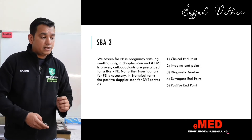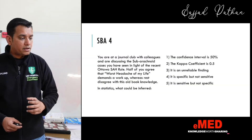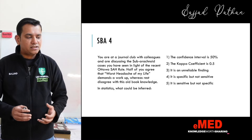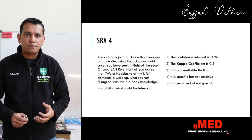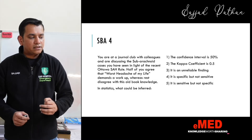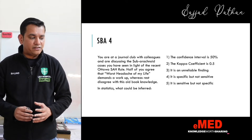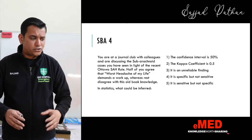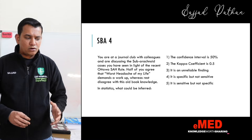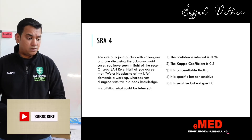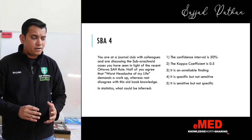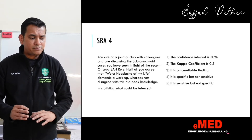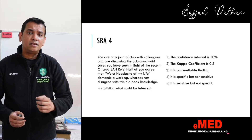Question four: you are at a journal club discussing subarachnoid cases in the light of the recent Ottawa Subarachnoid Hemorrhage Rule. Half of you agree that 'worst headache of my life' demands a workup, whereas the rest disagree. In statistics, what could be inferred? Options: confidence interval is 50%, kappa coefficient is 0.5, it is an unreliable finding, it is specific but not sensitive, or it is sensitive but not specific.